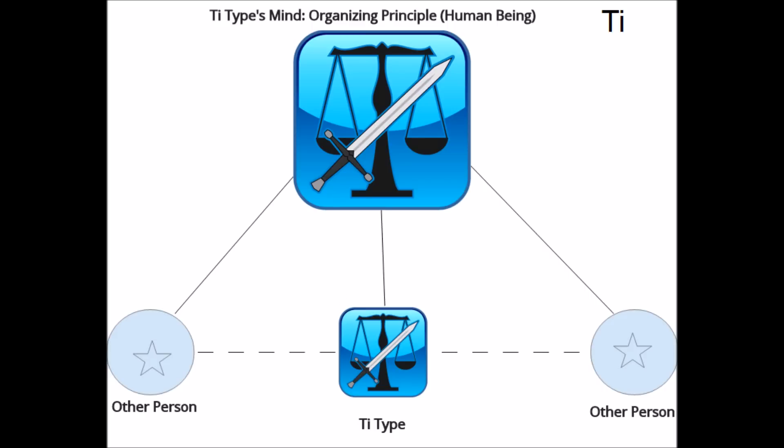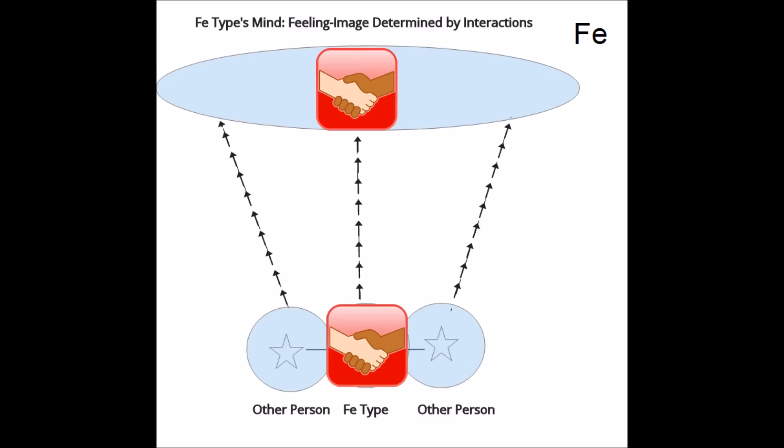Since the TI type starts with the impartial principle, their representation of the commonalities between individuals will be impersonal, come what may. For this reason, they may seem robot-like and their rather inflexible approach may be too far removed from the actual sentiments of people.